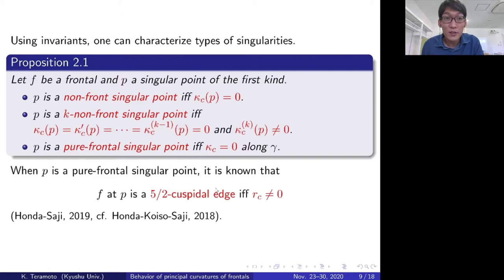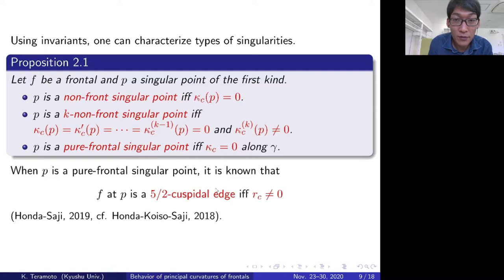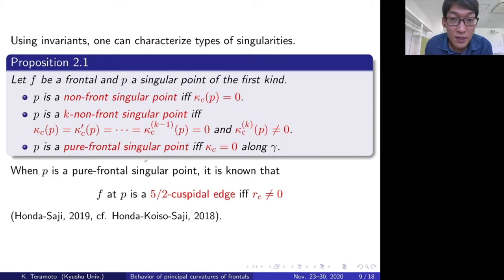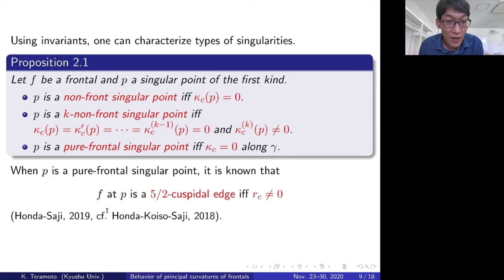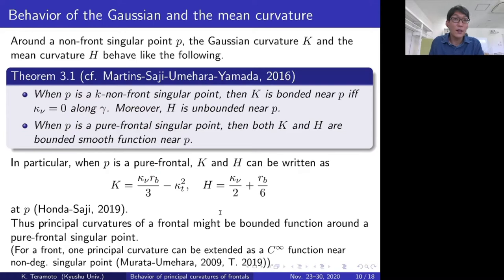Using the invariant κ_C, we can characterize types of singularities. Let f be a frontal and p a singular point of the first kind. Then p is a non-front singular point if and only if κ_C vanishes; p is a k non-front singular point if and only if κ_C satisfies the corresponding condition for k; and p is a pure frontal singular point if and only if κ_C vanishes along γ. When p is a pure frontal singular point, it is known that f at p is a (2,5)-cuspidal edge if and only if the secondary cuspidal curvature r_c does not vanish at p.